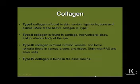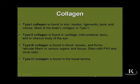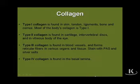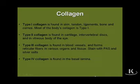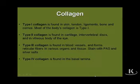Type 2 collagen is classically found in different types of cartilage, intervertebral discs, and in the vitreous body of the eye. Type 3 collagen forms reticular fibers that stain uniquely with PAS and silver salts. These are found in blood vessels and form the stroma network in various immune organs and glandular organs.